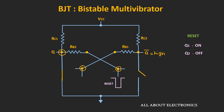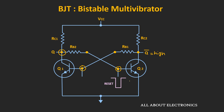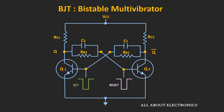In this way, by applying the trigger pulse, we can set the output of this multivibrator in any of the two stable states. When we apply the trigger pulse to the transistors, it takes some time to transition from cut-off to saturation or from saturation to cut-off. So many times, to speed up this transition, speed-up capacitors are also connected in parallel with these resistors.